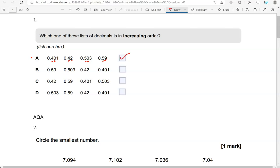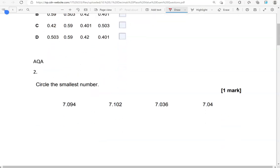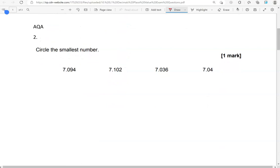The decimals in A are all in order, starting with the smallest. Circle the smallest number. Sometimes they are referred to as decimals, sometimes as numbers, and both of them are fine because decimals are numbers.